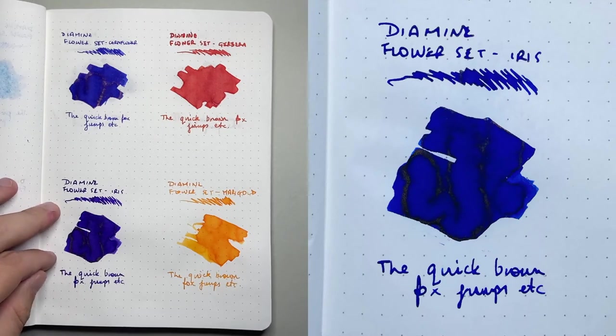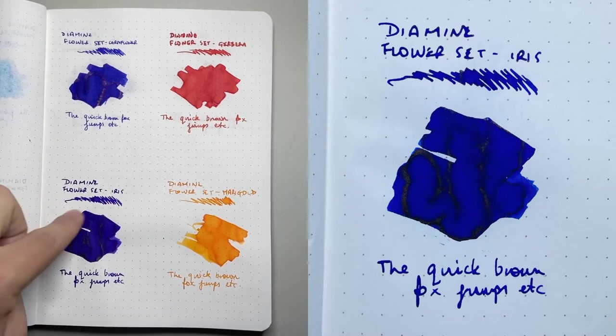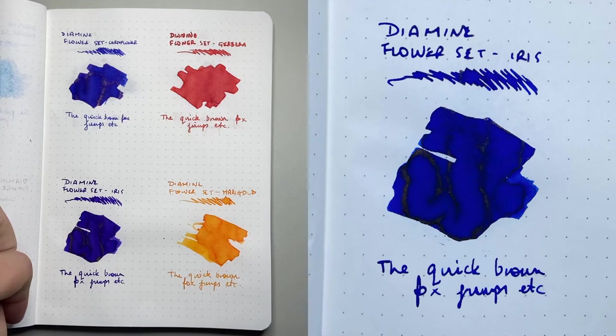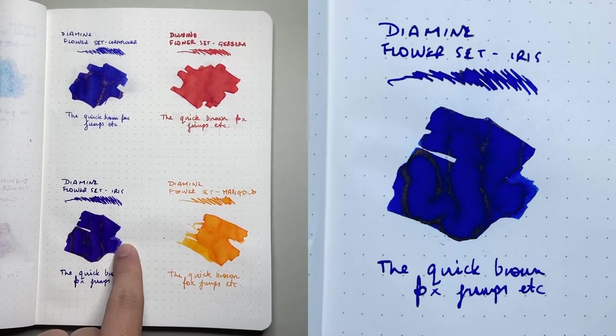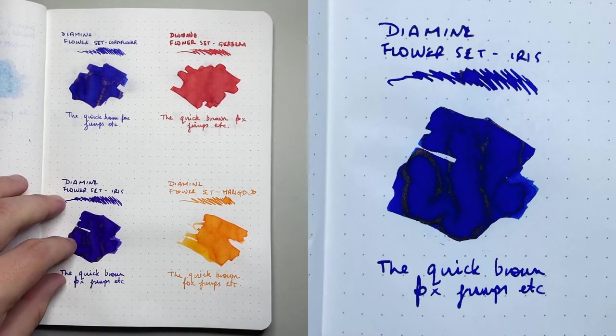Then Iris, which is a blue purple. It looks more purple on Tomoe River than it is, say, on Rhodia, where it looks just a bit more sapphire blue. Nice sheen, nice shading, some beautiful shading there. Once again, dusty purple sort of coming through in the shading, which is really, really lovely.